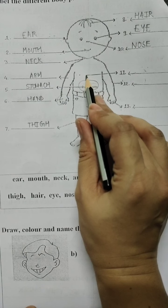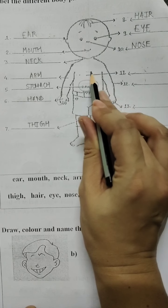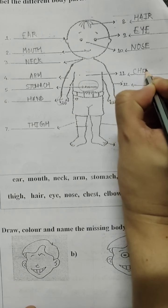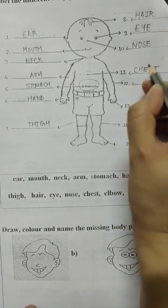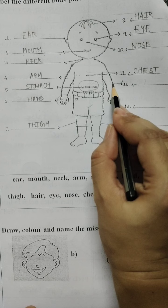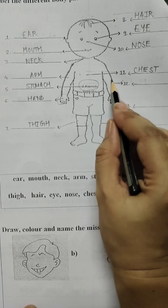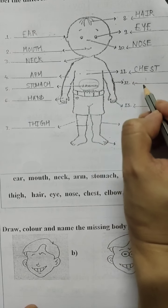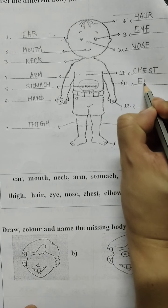Now here children, this is the chest. The upper portion of the body, this is known as the chest. Now students, this is the thing that we have just drawn. That is the elbow. The elbow helps us to fold or bend our hands. So this is the elbow.